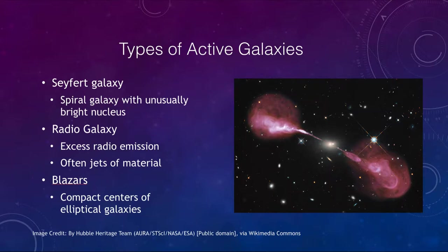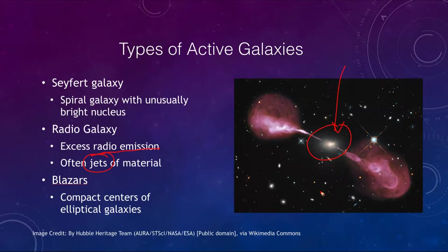Another type would be what we call a radio galaxy. As you might expect, they have excess radio emission and often emit jets of material. We can see that here — the galaxy itself is at the center, looks like a nice elliptical galaxy, and it is emitting a lot more radio emission than a regular elliptical galaxy. It has jets of material beaming out in each direction. You can see how highly collimated the beams are as they leave the galaxy, and then as they reach and strike the intergalactic medium they spread out into great radio lobes. This is actually a combined image showing the optical emission as well as the radio emission from the jets plowing into material between the galaxies.